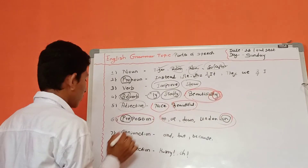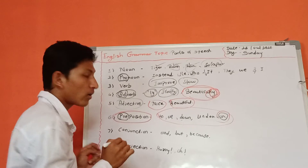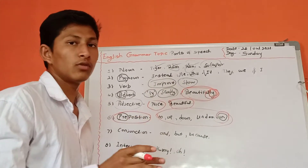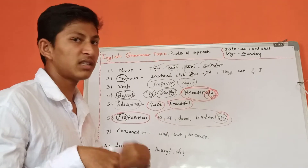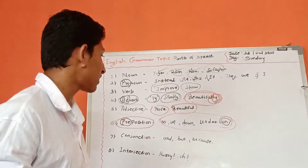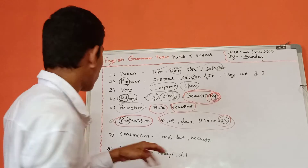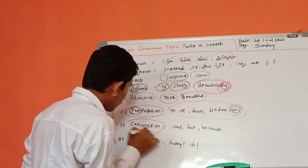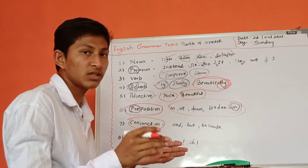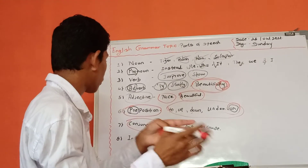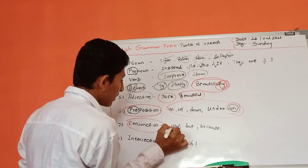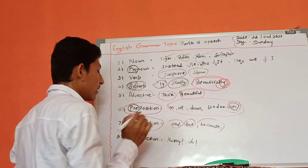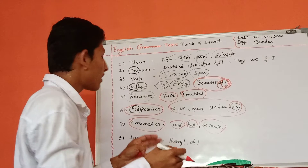Conjunction is nothing but which adds two sentences and shows the relationship between two sentences and two clauses — that you call Conjunction. Which is used to add two sentences or two clauses — that you call Conjunction. For example, 'and' and 'but' — these all are conjunctions. There are many more examples.